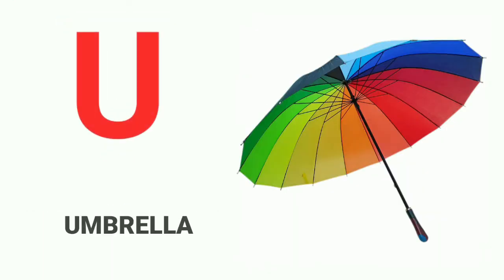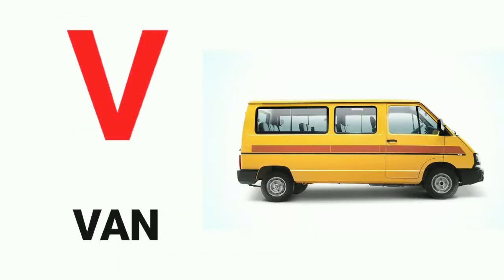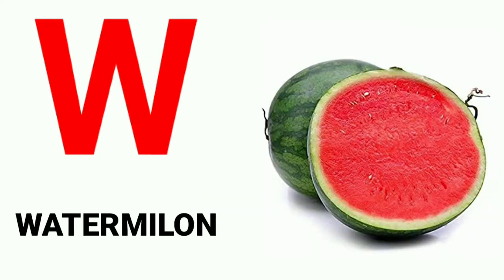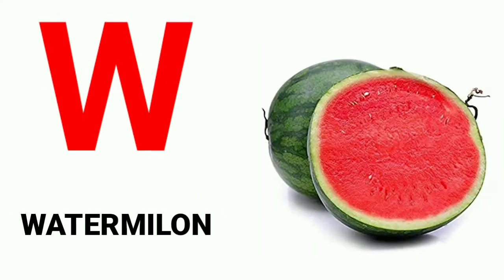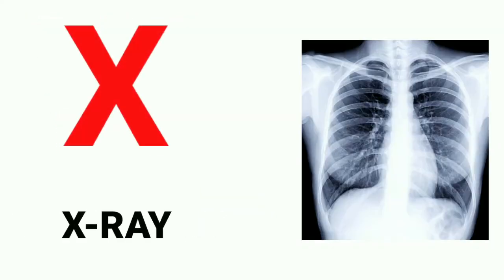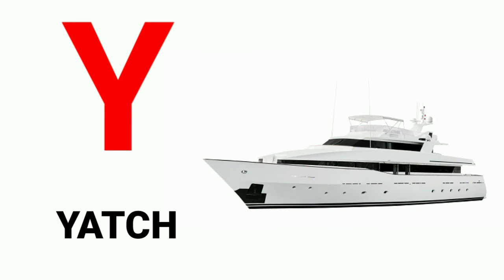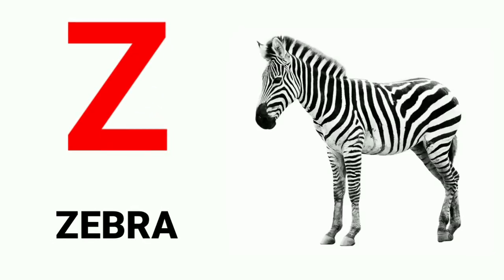S for sun, T for telephone, U for umbrella, V for pen, W for watermelon, X for x-ray, Y for yard, Z for zebra.